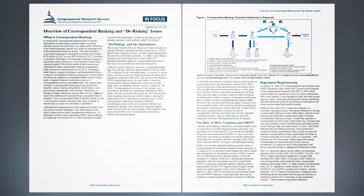Two interrelated primary policy issues involved with Correspondent Banking are: 1. What types of anti-money laundering (AML) and countering the financing of terrorism (CFT) controls should be in place to prevent illicit payments? 2. How to prevent excessive industry reaction to such controls, called de-risking?